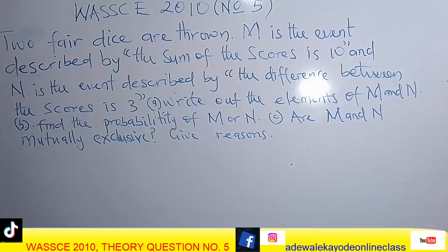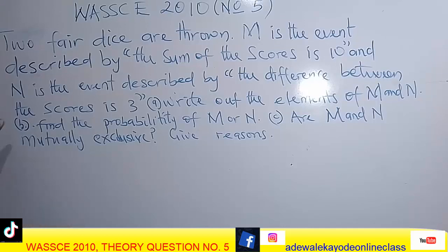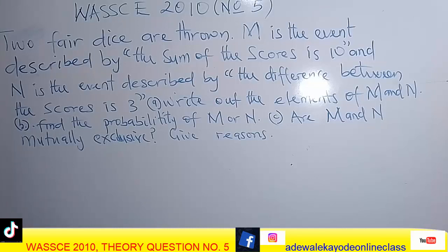M is the event described by the sum of the scores being 10 — that is, when you sum the scores together you get 10. N is also an event described by the difference between the two scores being 3 — that is, the difference between the two scores is 3.